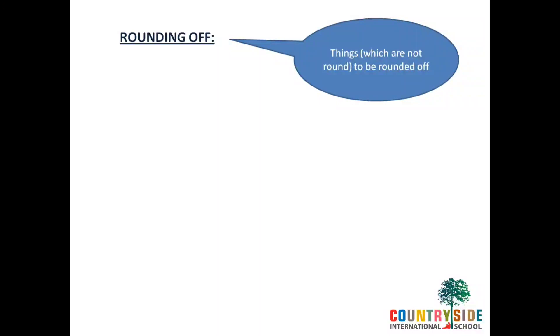Let's take an example of a square, rectangle, kite, or rhombus. They are not circle in shape or round in shape, so you have to round them off. Something which is not round in shape is to be rounded off.